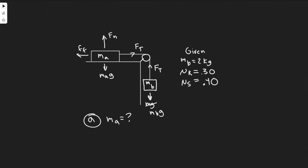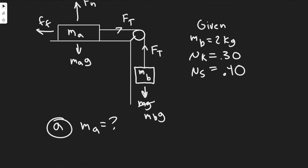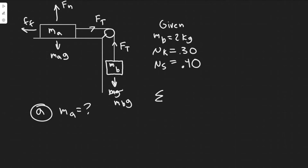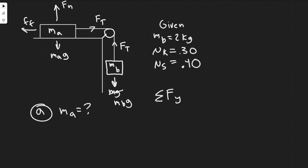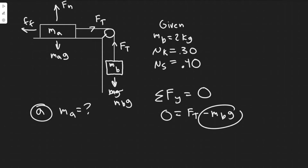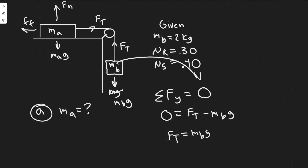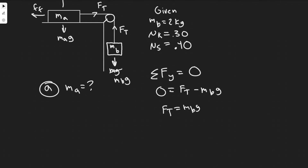We're going to be solving for MA, finding the minimum value to keep it from starting to move. This block B is going to be pulling down, and if we want it not to move, the force of tension has to equal MBG. We show that by taking the sum of the forces in the Y direction equal to zero, since we don't want this to move. So: 0 = FT − MBG, which tells us FT = MBG. That's what we want because we want this block to be frozen — that's why we set it to zero.